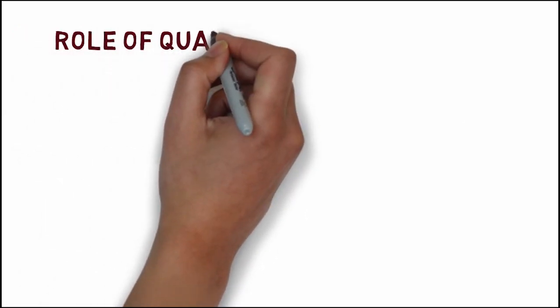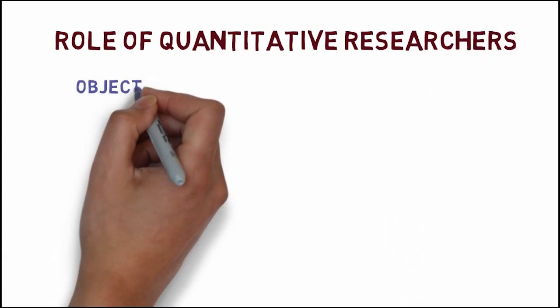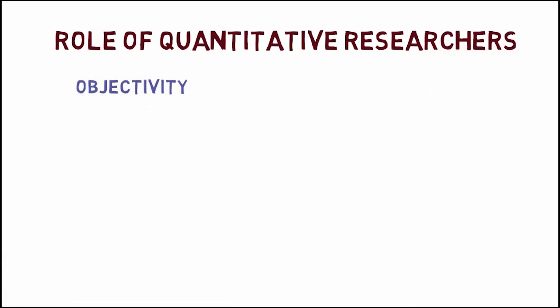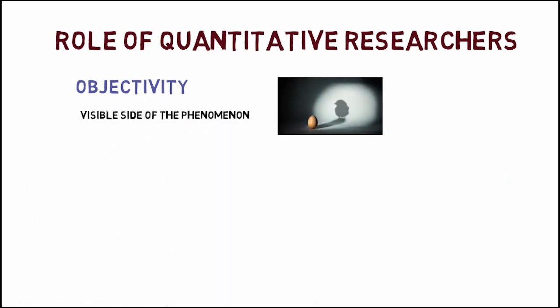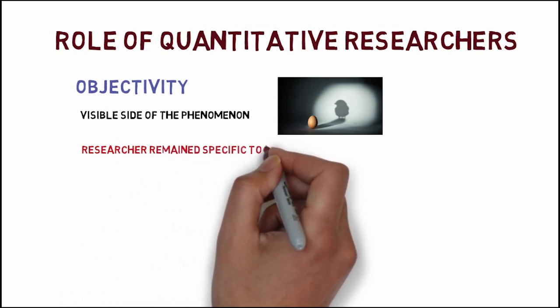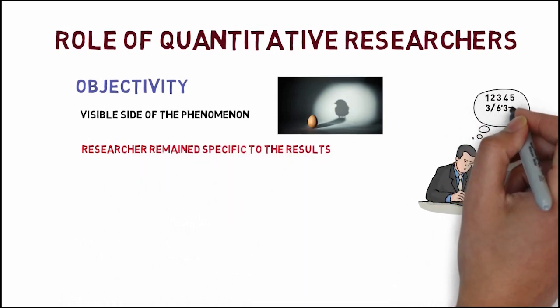Now, I am going to tell you the role of quantitative researcher. These researchers believe in objectivity, therefore, see only the visible side of the phenomenon or the situation. Quantitative researcher remain specific to the results. These researchers always think in numbers.